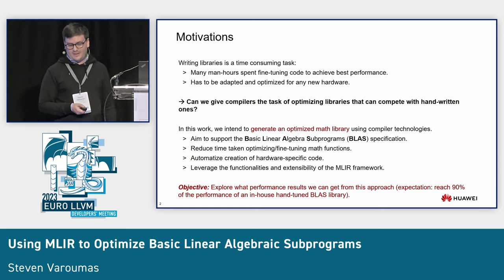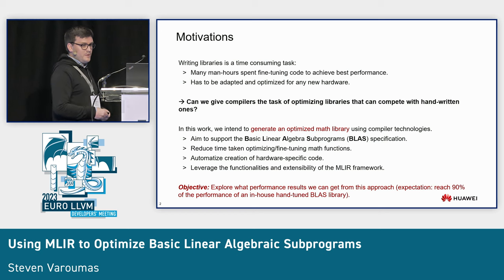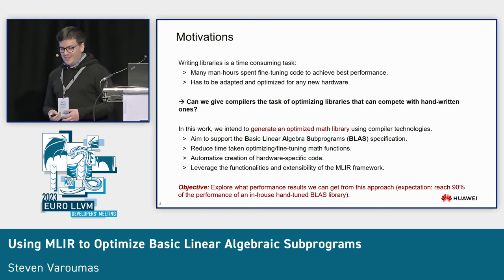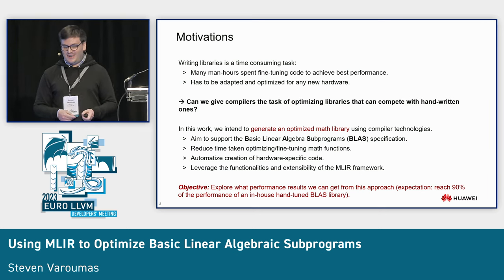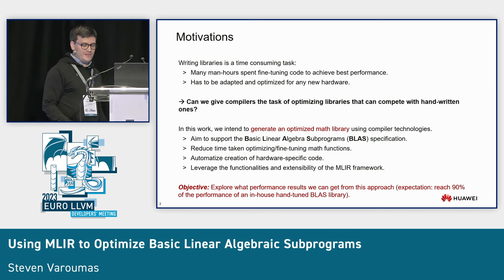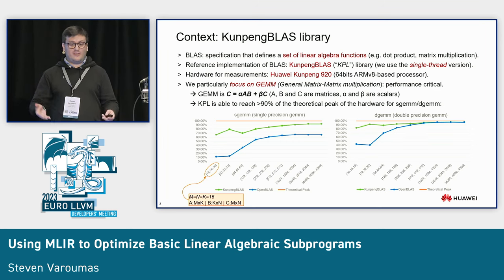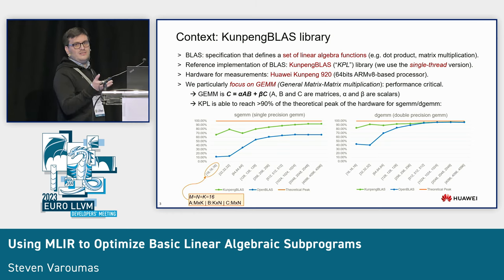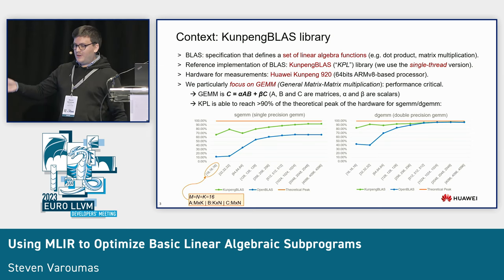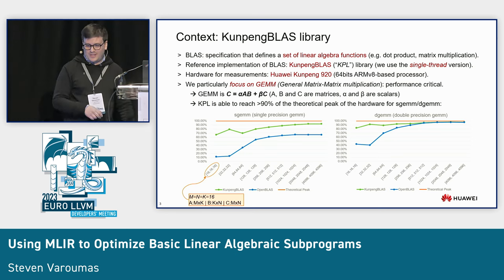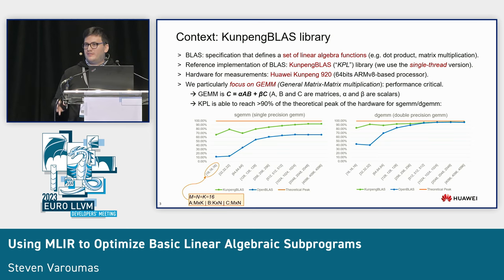The initial objective was to explore what performance we can get from this approach. Our expectation was to get to something like 90% of the performance of a reference library — an in-house hand-tuned BLAS library at Huawei called Kunpeng BLAS, or KPL for short. It's an implementation of BLAS, which is itself a specification defining a set of linear algebra functions — dot product, vector multiplication, matrix multiplication — and we compare ourselves with the single-threaded version of this library.